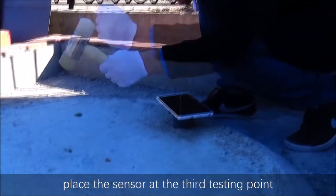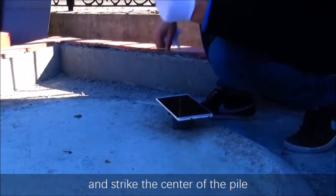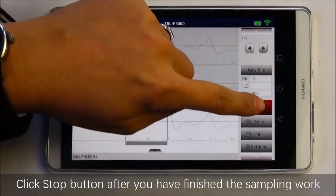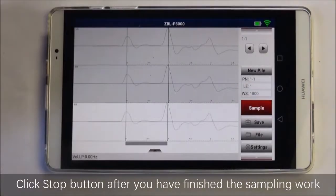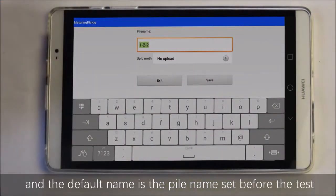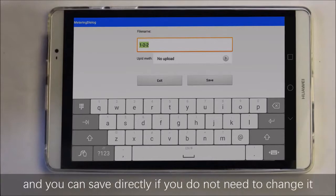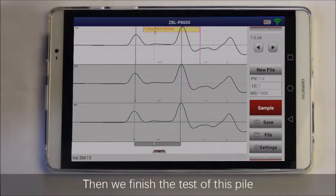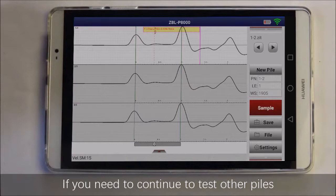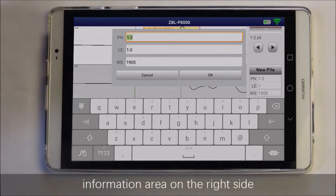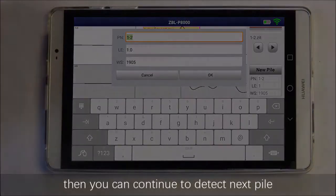At last, place the sensor at the third testing point and strike the center of the pile three times with the hammer again. Click the stop button. After you have finished the sampling work, click the save button. The default name is the pile name set before the test. Then we finish the test of the pile. If you need to continue to test other piles, click the new pile button in the pile information area on the right side.